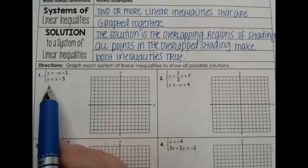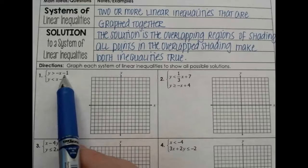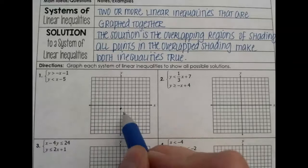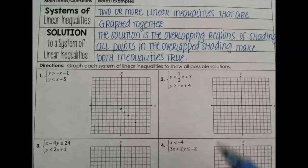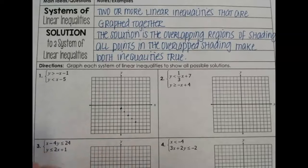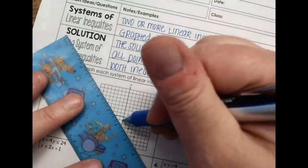So I have my first two inequalities — they are already in slope-intercept form, which is the easiest way to graph these. I am going to start the top inequality at negative one, and it has a slope of negative one, which means go down one, right one. We have to remember this is not an equal sign inequality, which means we have to have a dotted line because our line is not included in part of our solutions.